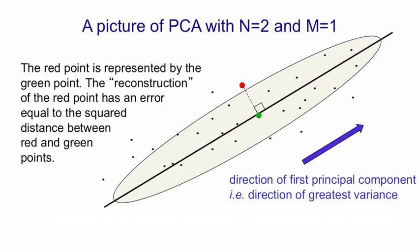And consider a data point like that red one. If we used principal components analysis with a single component, that component would be the direction in the data that had the greatest variance.